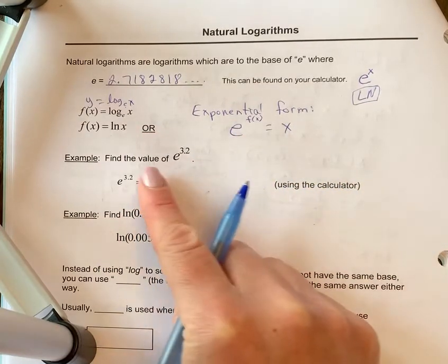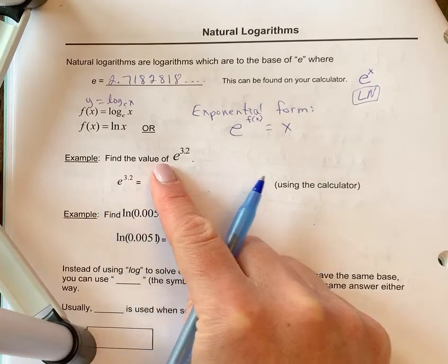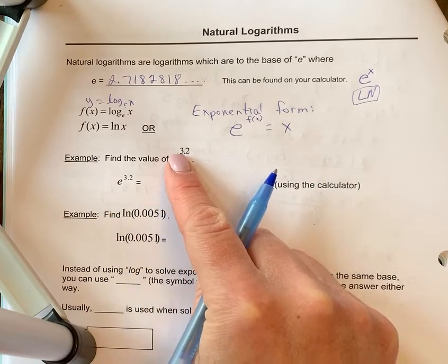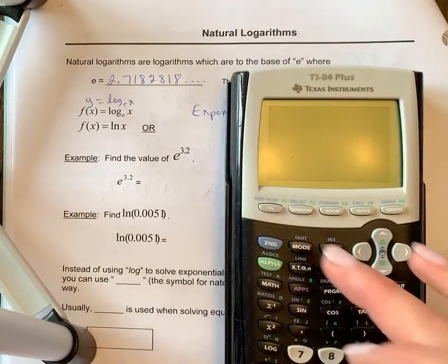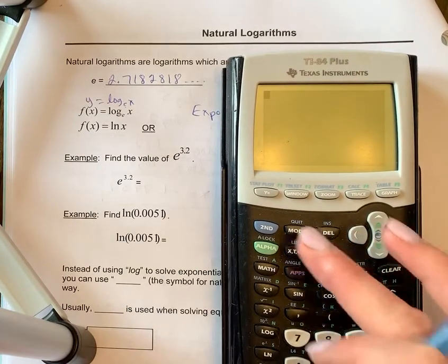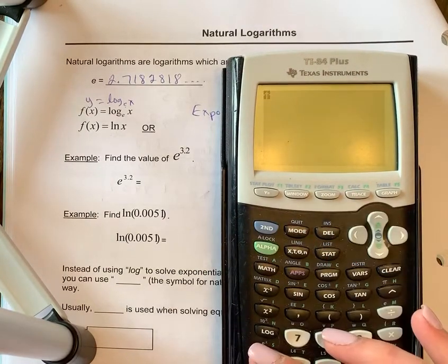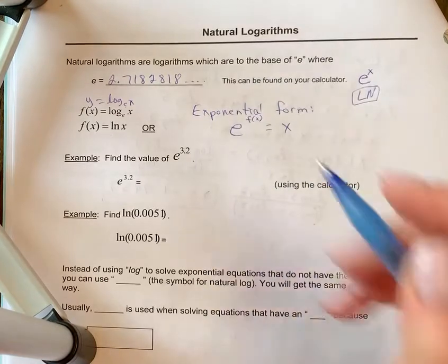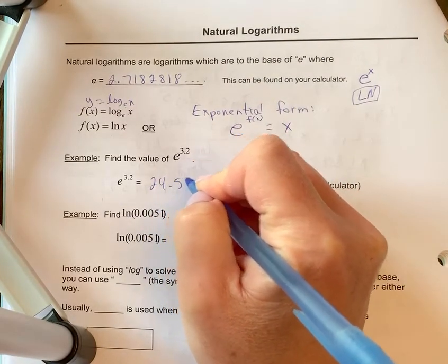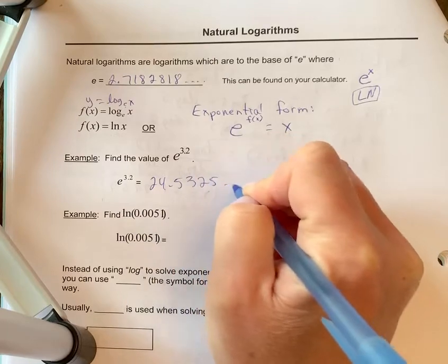We just want to practice using our calculator a little bit. If you want to find the value of e to the 3.2, so this is just an exponential function question. You would just type in, so make sure you try on your calculator, shift e for me. And then I put in 3.2 and I get 24.5325, etc.